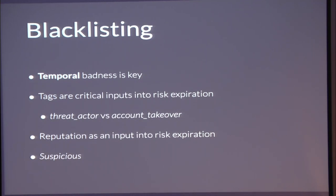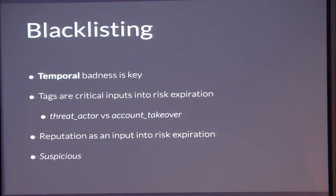Blacklisting: email address blacklisting is very tough. The correct approach is to ensure temporality — when something is risky, it's temporally risky for some time window. For high reputation email addresses, these could be somebody's actual account that was taken over. Tags are critical inputs, particularly risk expiration. We have a threat actor tag: if you get hit with a threat actor tag, you're pretty much always blacklisted because you're the exclusive owner of this address and it's not associated with a normal person. Account takeover is the opposite — it's a legitimate person that's temporally bad for a particular time window. We use reputation as an input: if the email address is high reputation, we can assume it's been taken over and apply a lower suspicious window. In our API response we distinguish between 'suspicious' and the specific reasons — blacklisted, reported, and so on. As a defender, just because something is suspicious doesn't mean you drop the message; it's all context dependent.